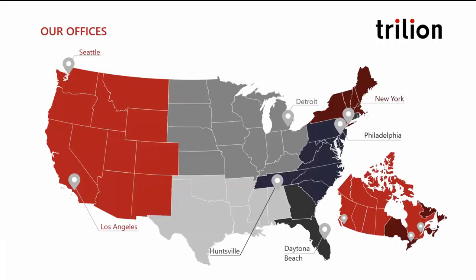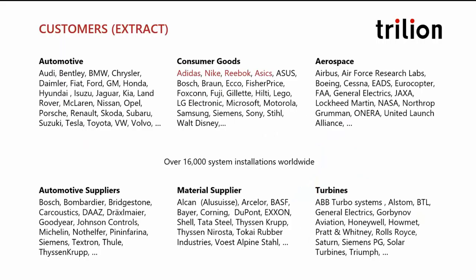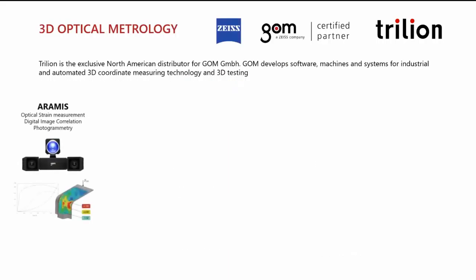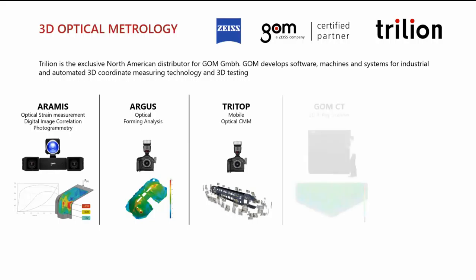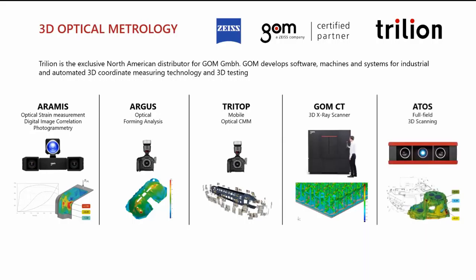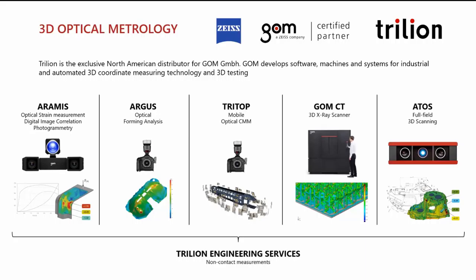A little bit about Trillion. We're headquartered just outside of Philadelphia, and we have representatives and offices across the U.S. and Canada. We've had the pleasure of working with schools and companies in various industries, including Adidas and Nike. There are over 16,000 GOM systems installed worldwide. We are the exclusive North American distributor for GOM, a German company held under Zeiss that develops software, machines, and systems for industrial and automated 3D coordinate measuring technology and 3D testing.